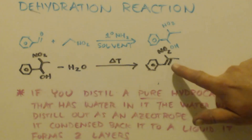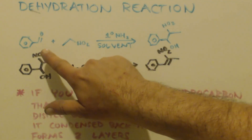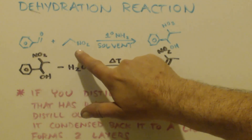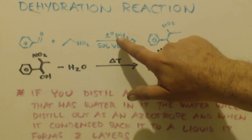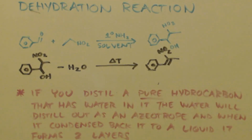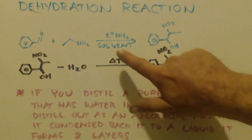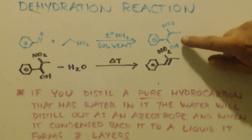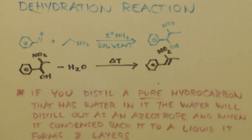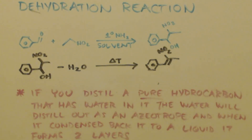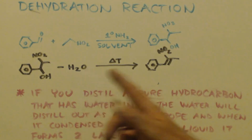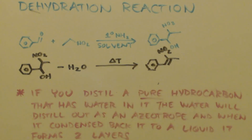So if you wanted to make the phenyl nitropropene, you would take benzaldehyde, which is a liquid, and nitroethane, which is a liquid. Your primary amine — normally you want something like butylamine, although any primary amine will work — and your solvent. You just mix them all together and you'll make your beta-nitro alcohol.